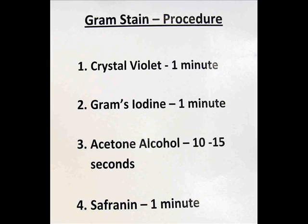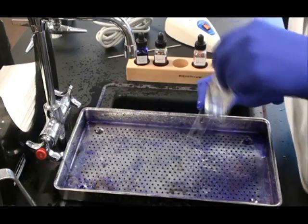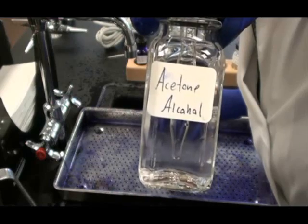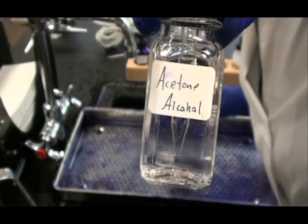My next step is to apply the decolorizer, acetone alcohol. What this step will do is remove the purple stain from my Gram negative cells. Here's the decolorizer.